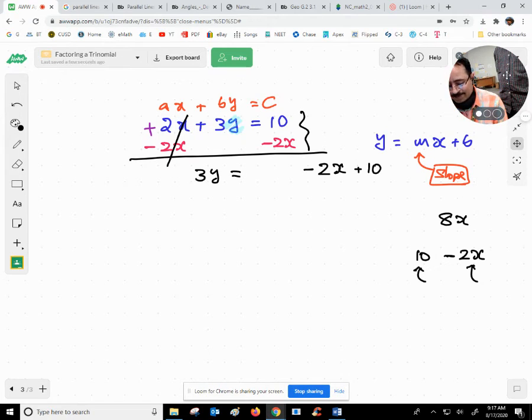How to get rid of this 3? If there is no sign between a constant and a variable, between a number and a letter, if there is no sign, you can assume that there is times. The inverse operation of times is division, so let me take division.